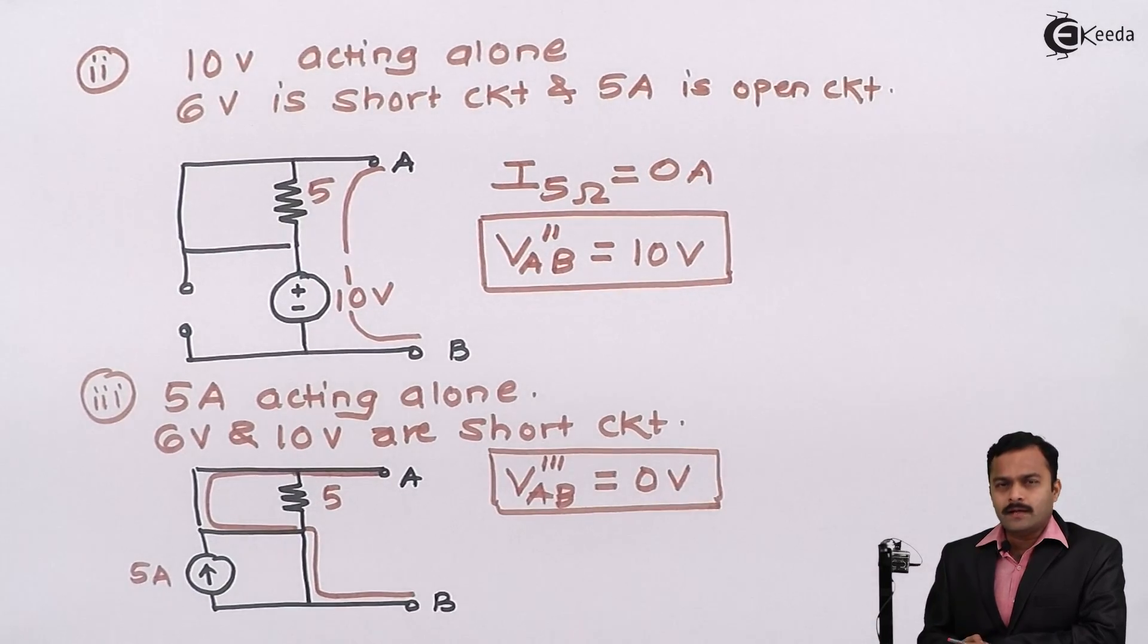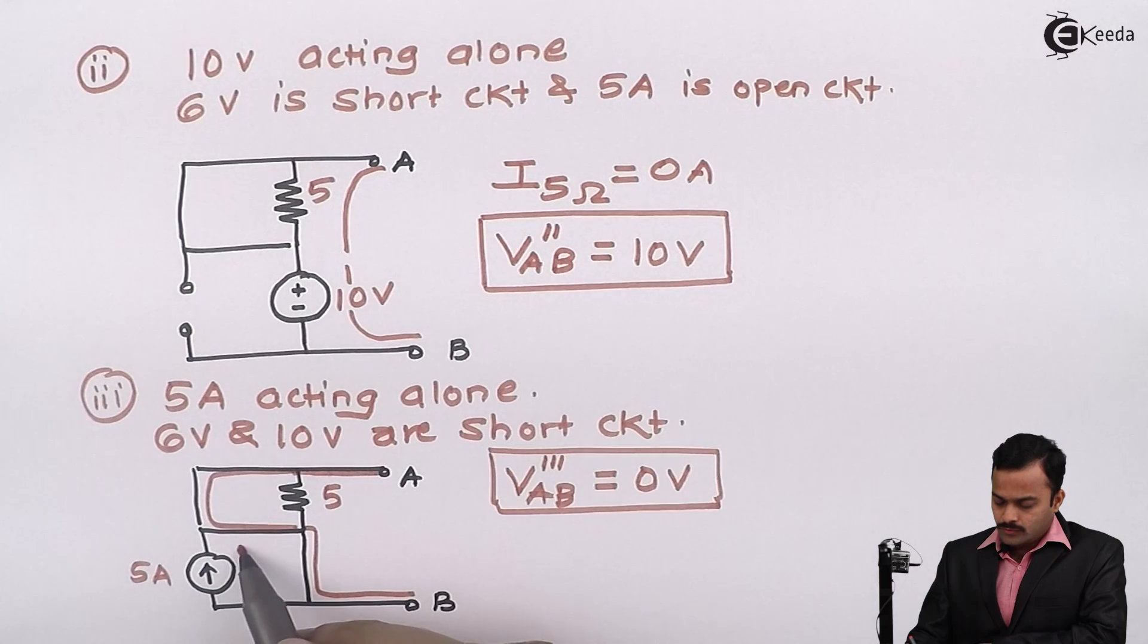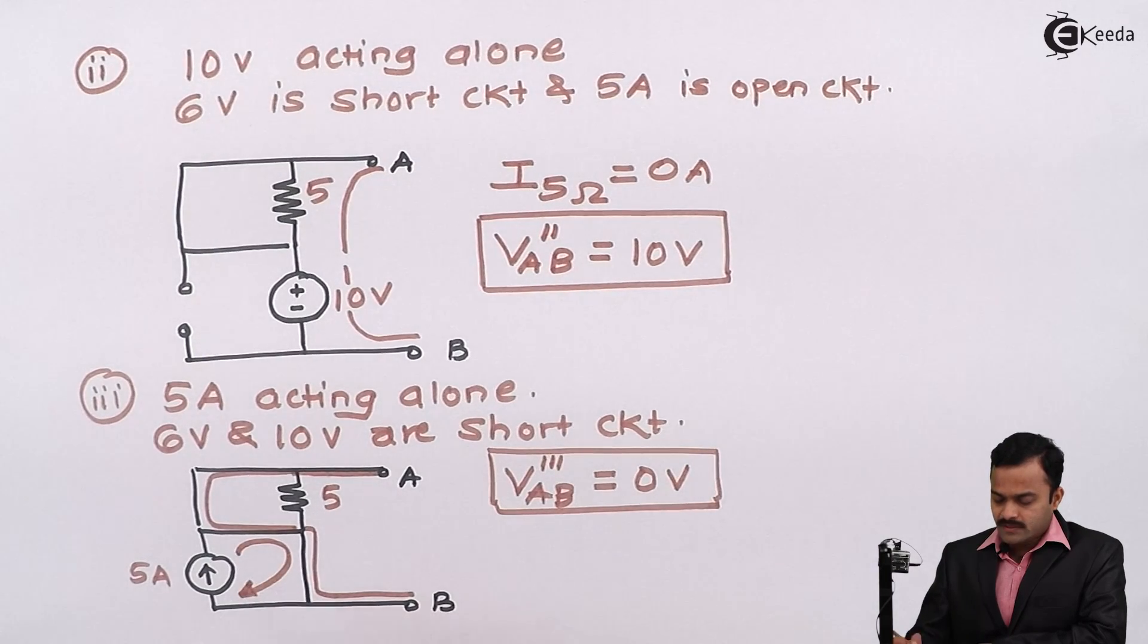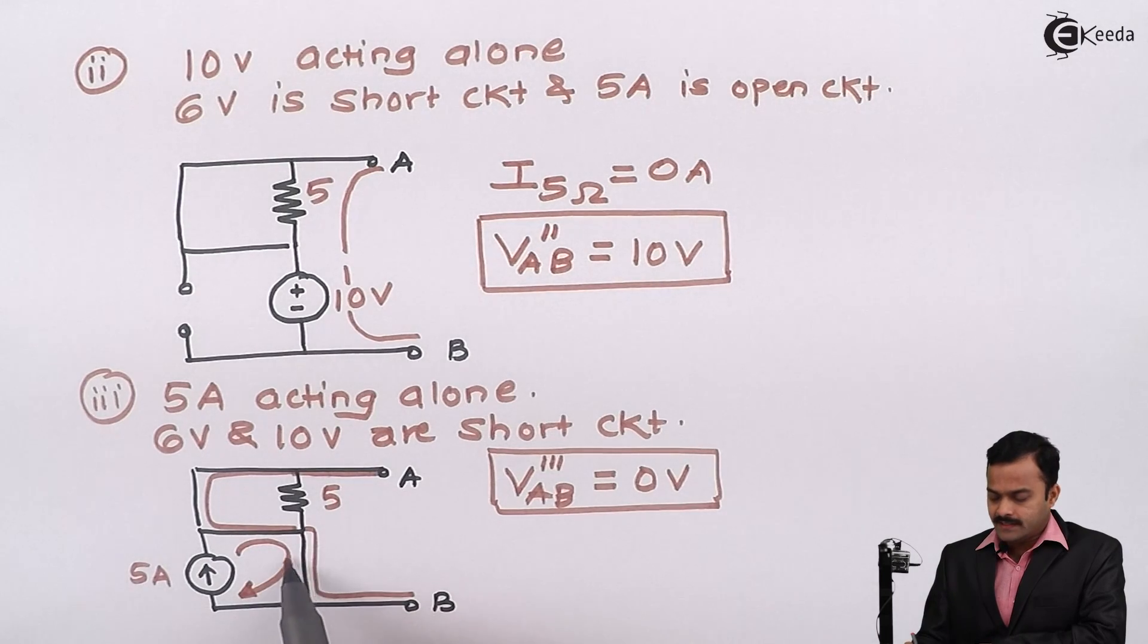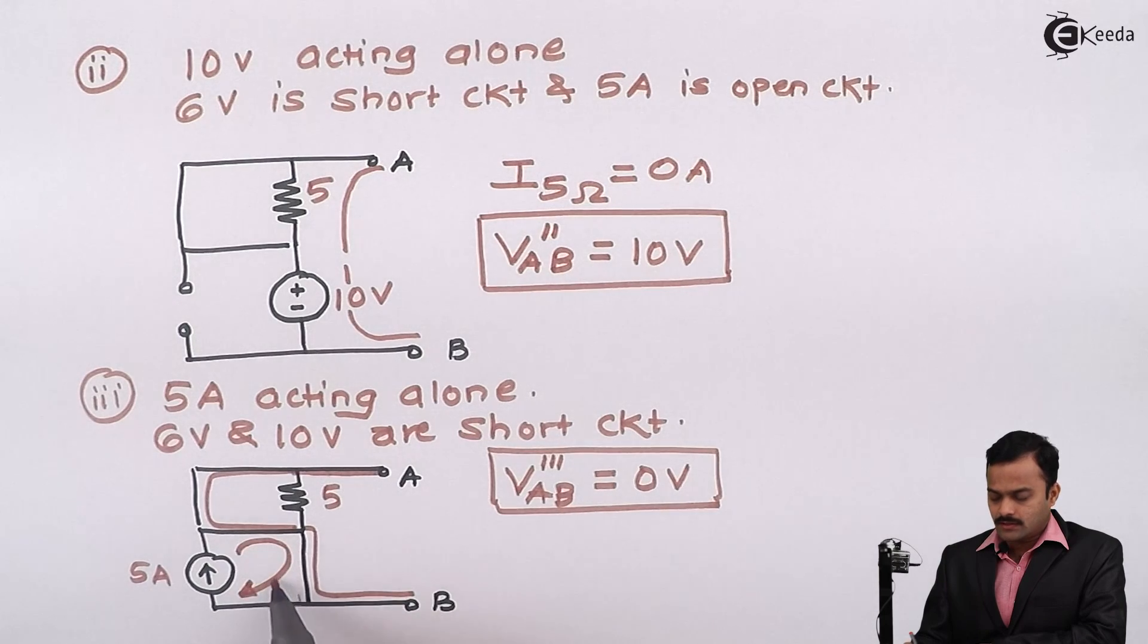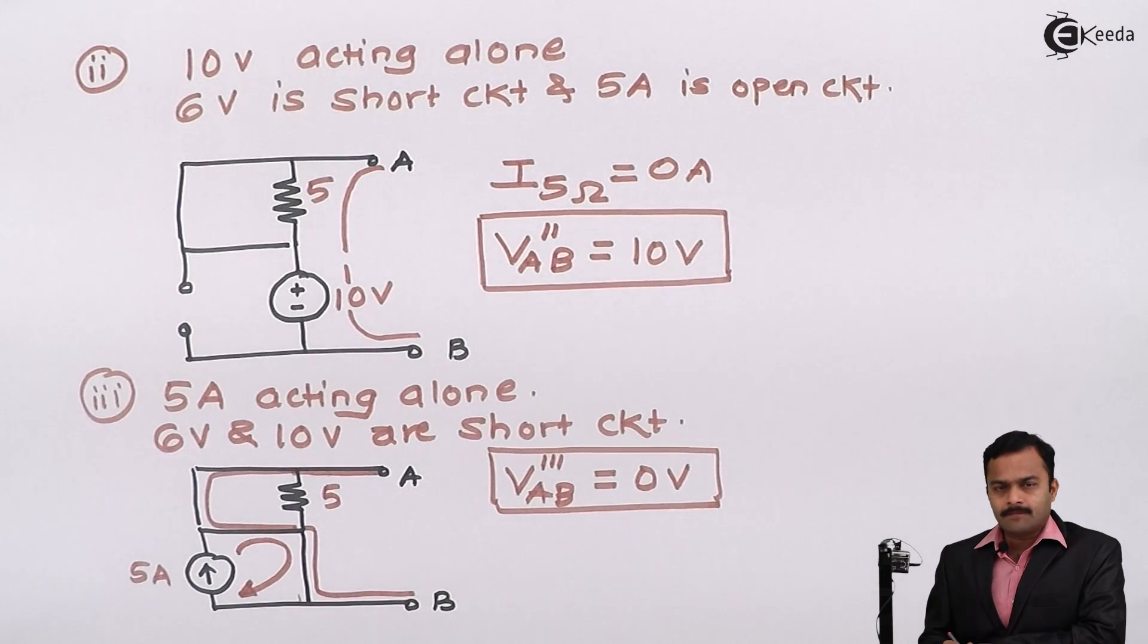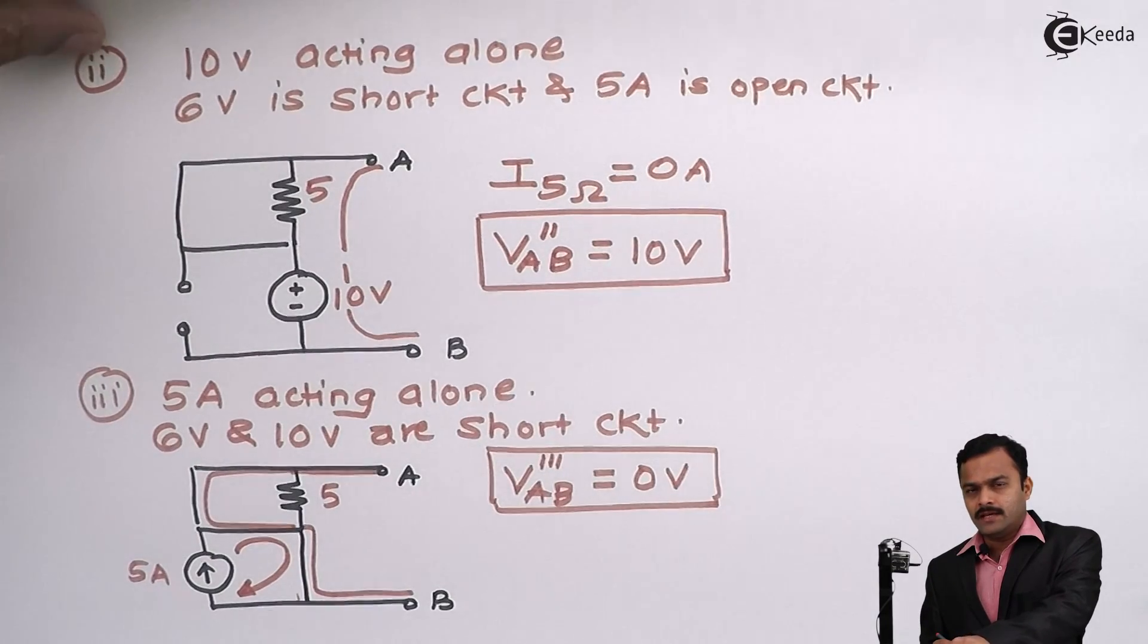Now, you may be wondering what will happen to this 5 ampere current. 5 ampere current will flow through this part of the circuit. It will just circulate over here since I am not having any resistance in this part. Therefore, there won't be any voltage drop despite of a current source present. It will just circulate in this loop. So ultimately, I will get VAB triple dash at 0 volt.